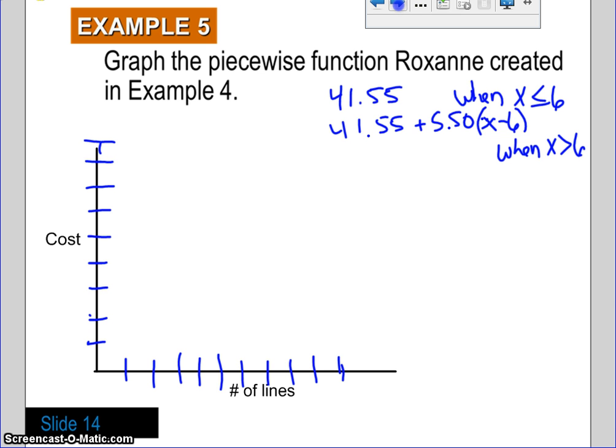So, we know that it's $41.55. So, let me go ahead and kind of label this, 5, 10, 15, 25, 30, 35, 40, 45. So, I know that 41.50 is somewhere right above that 40. And that cost is going to be consistent all the way out through six lines.